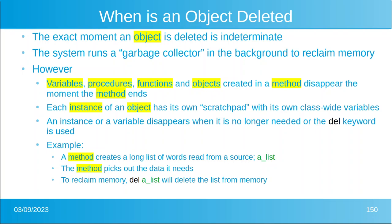An instance or variable can also disappear if you specifically delete it with the `del` keyword. This is often used if a method creates a very long list — say you read it from a file, picked out the words you need, and no longer need that long list. To reclaim memory, you use the `del` keyword to delete that list from memory.